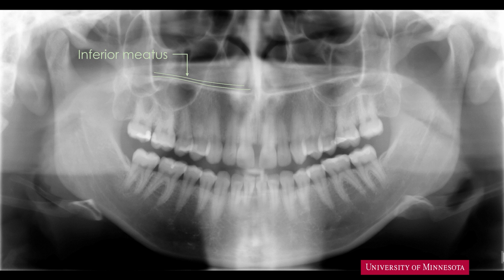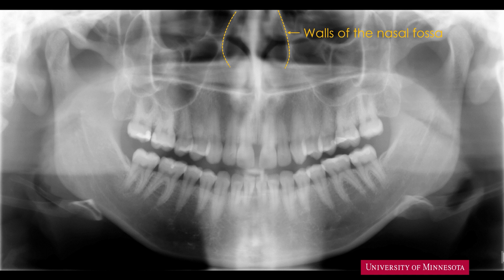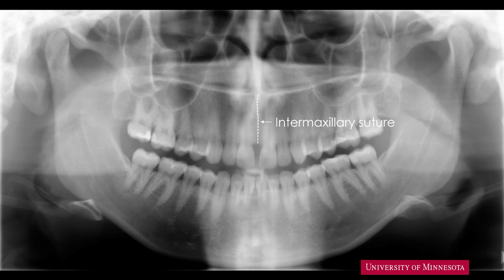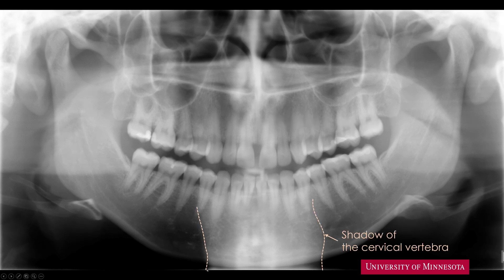Inferior to the inferior meatus is the radiopaque band representing the hard palate. On the lateral aspects of the nasal septum are curved radiopaque bands — these are the walls of the nasal fossa. You can identify faint lines of contrast superimposed over the hard palate — these are the soft tissue outlines of the nose. At the midline, there is a thin radiolucent line representing the intermaxillary suture. Superimposed over the midline of the mandible is a wide, poorly defined radiopaque band — this is the shadow of the cervical vertebra.